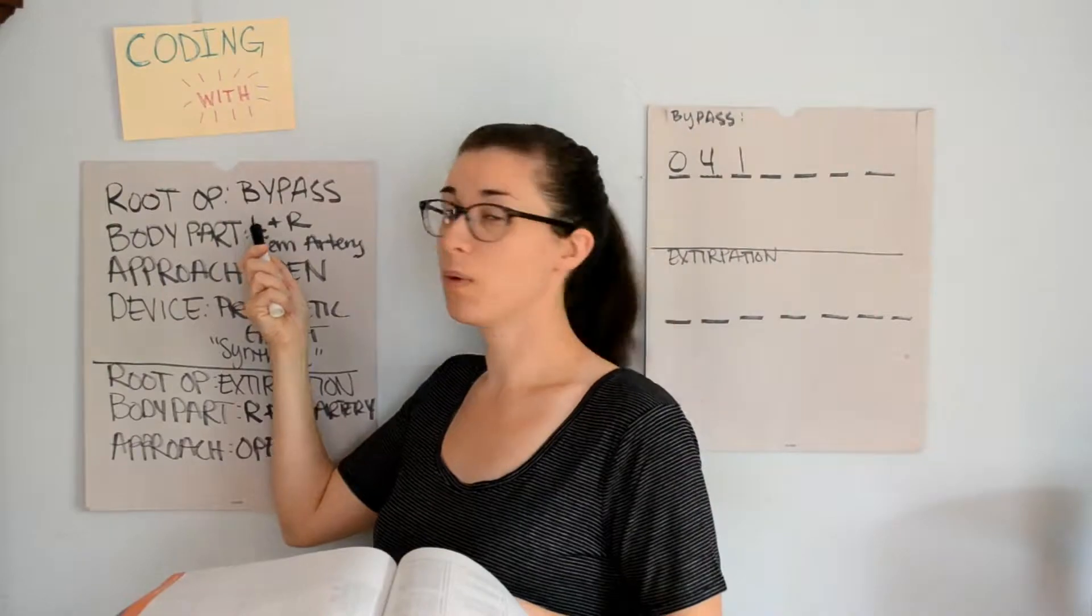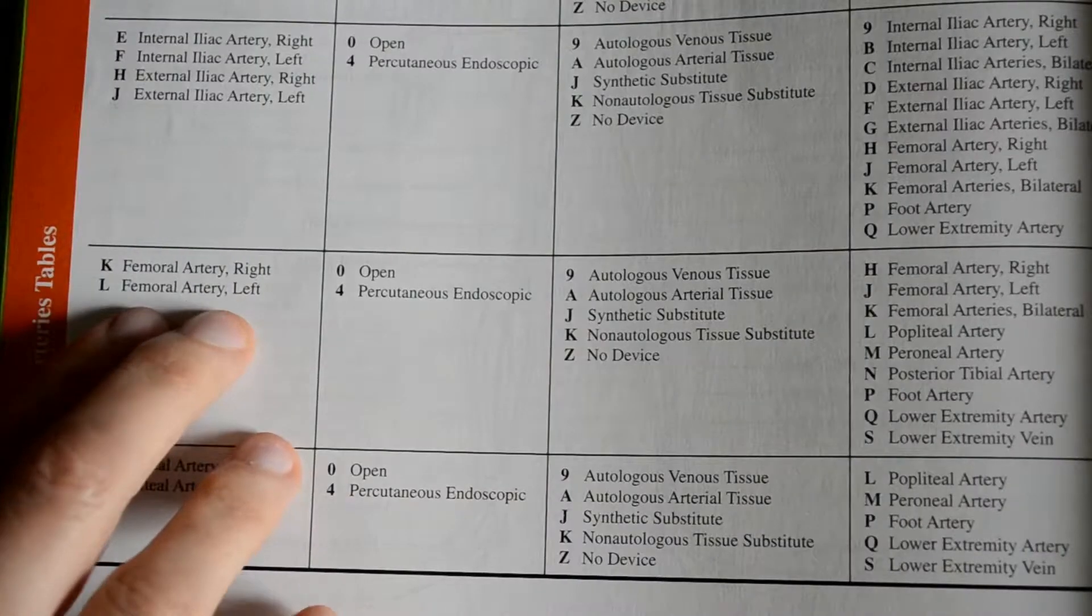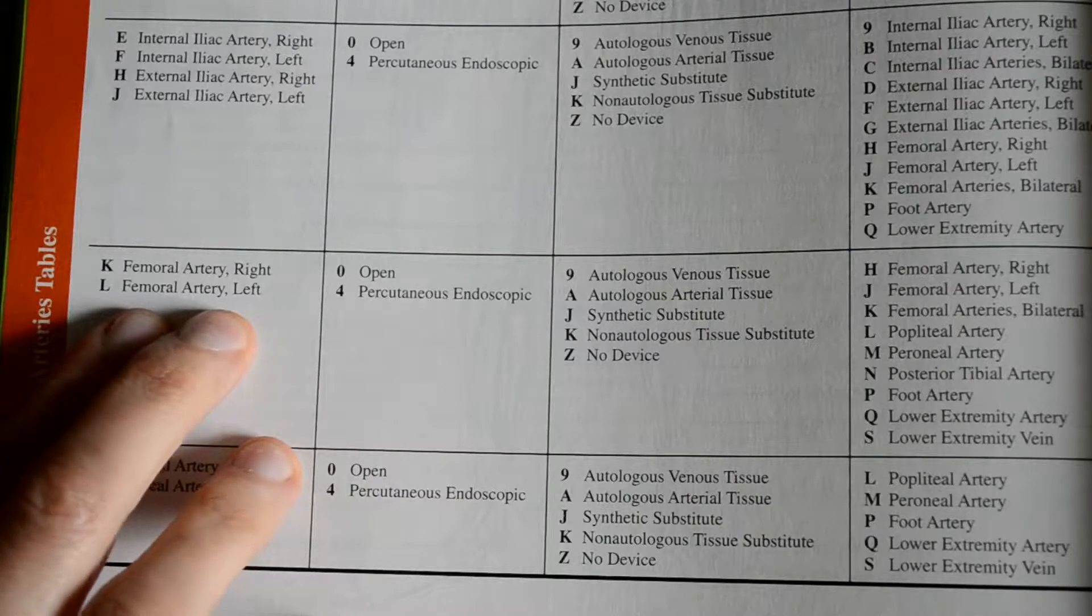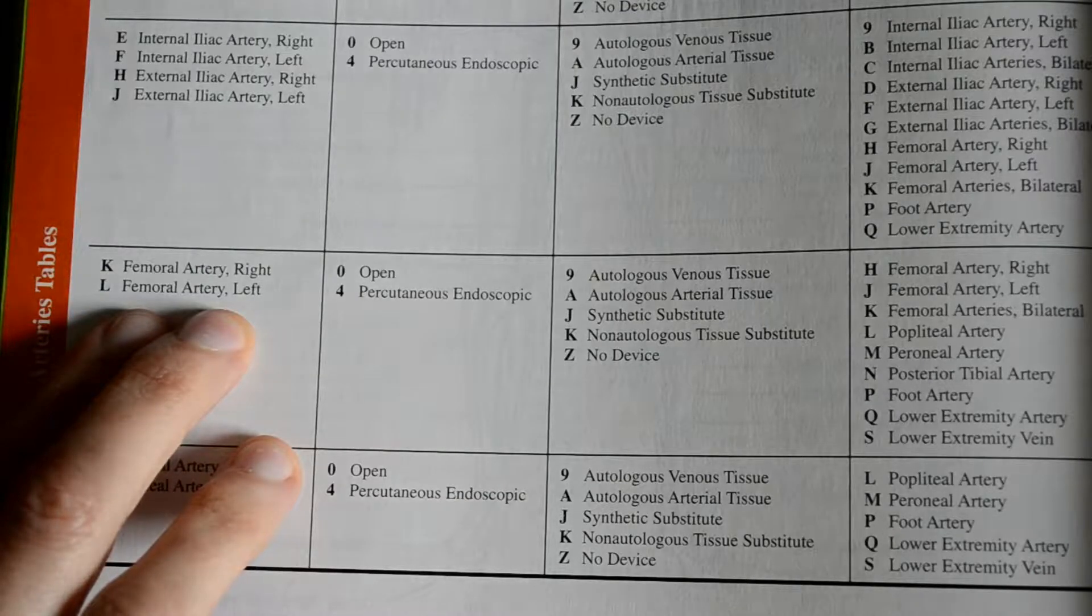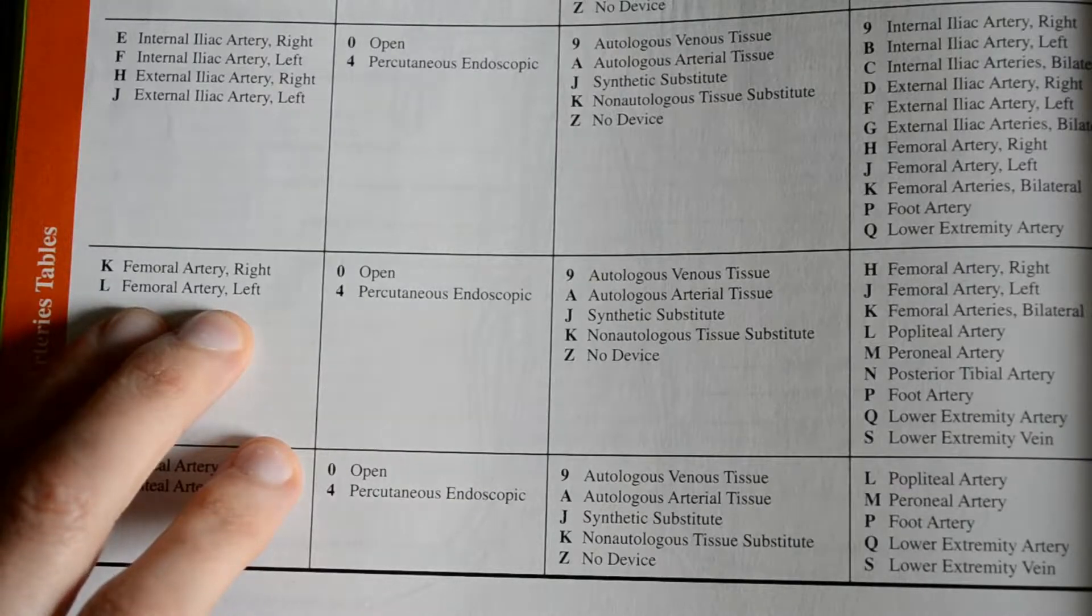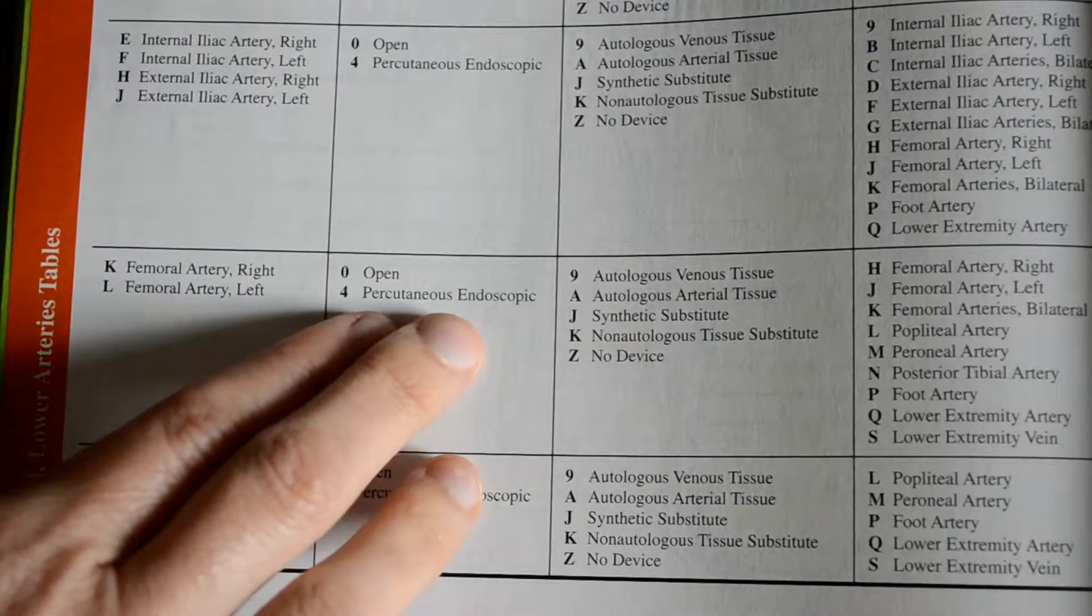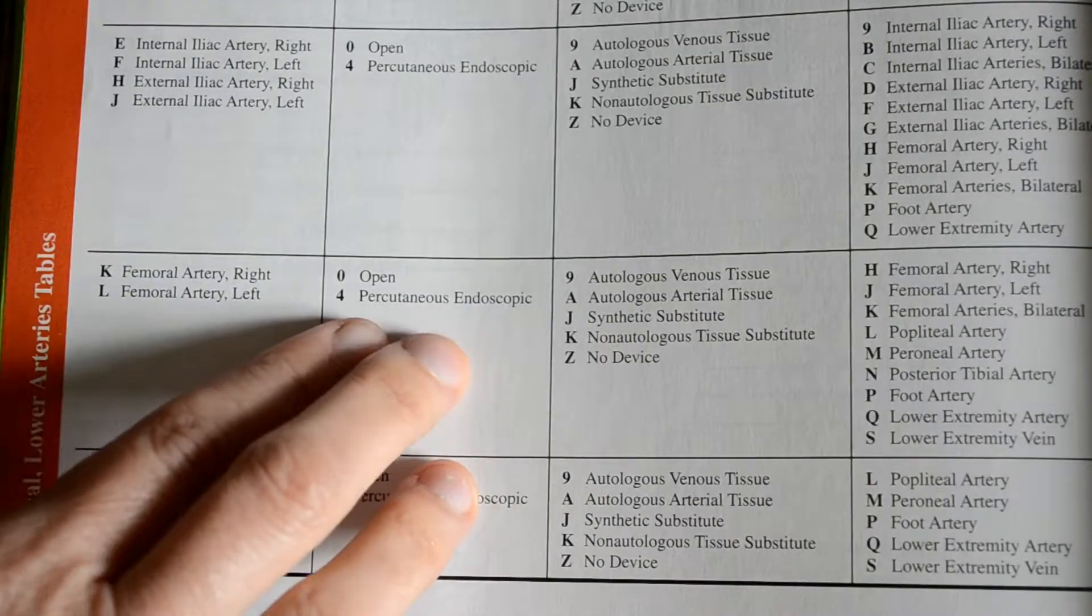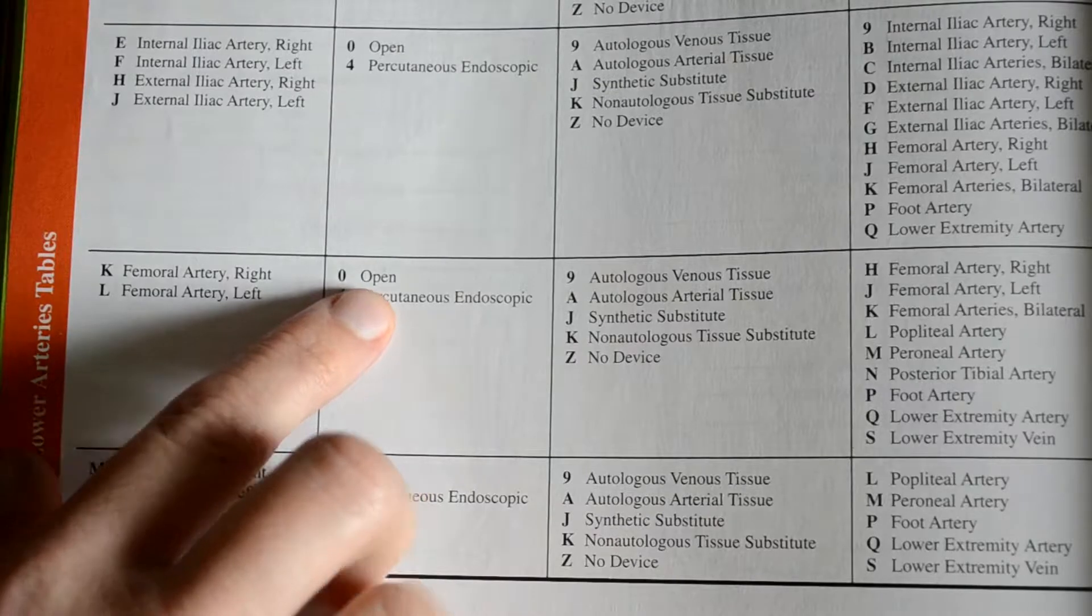We know that the bypass started in the left femoral artery, and the blood supply was going to the right femoral artery. So, in our body part character, we want to look for the left femoral artery. We want to look for femoral, it is almost near the bottom of the table, and we want to look for left. Femoral artery left, that's an L. And then staying in that row, our approach column, which is our fifth character placement, we found that to be open, so that's an O.